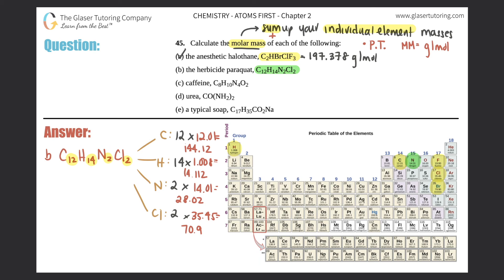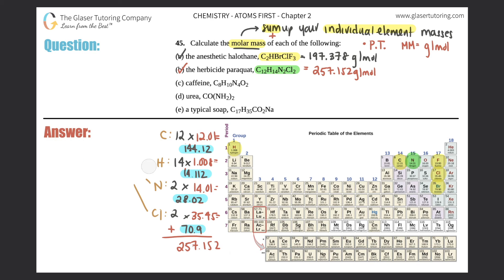Now we add all the parts together: 144.12 + 14.112 + 28.02 + 70.90 = 257.152 grams per mole. That's the answer to part B — checked off and good to go.